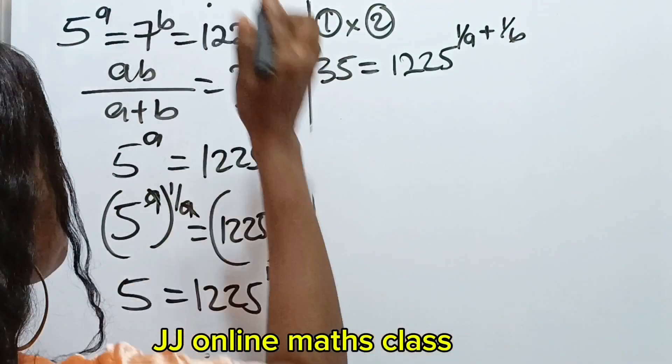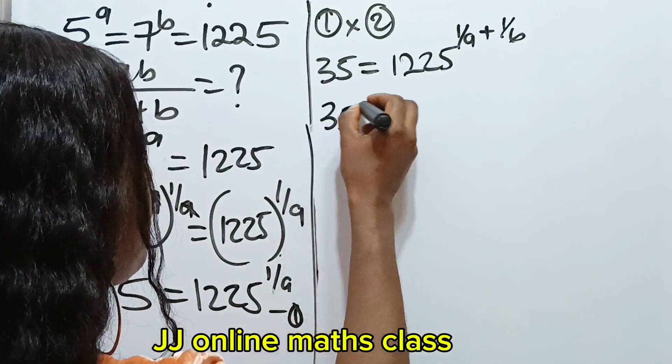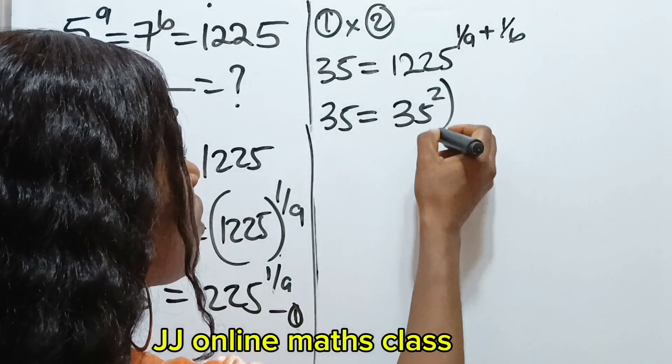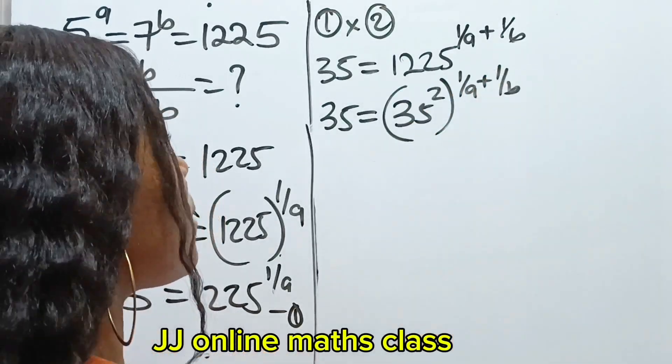Okay, now, let me explain this. So we continue. We have that 35 is equal to 1225 is same as 35 squared, okay? Raised to the power of 1 over a plus 1 over b.